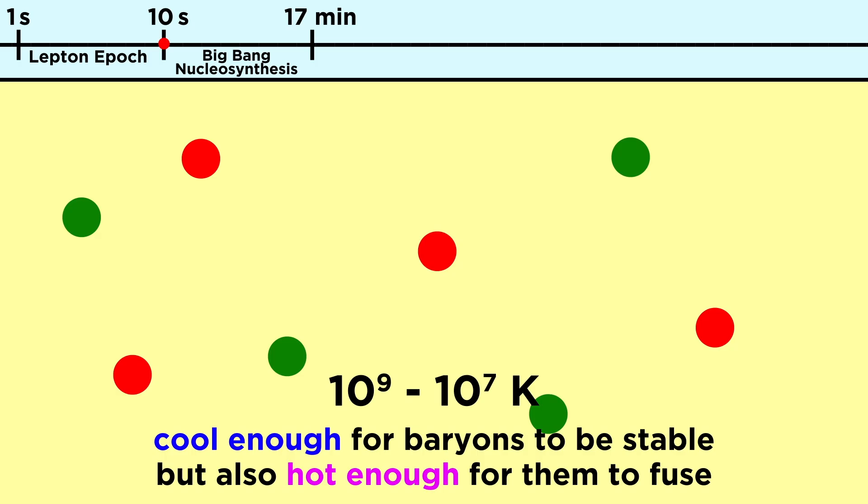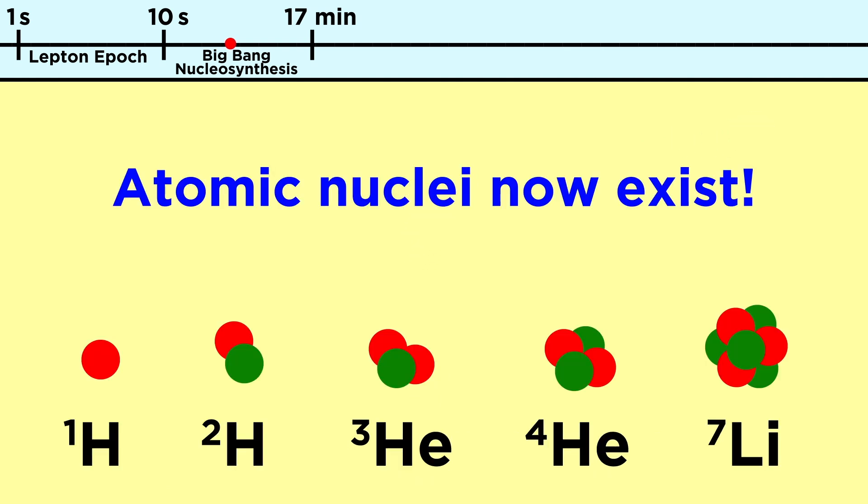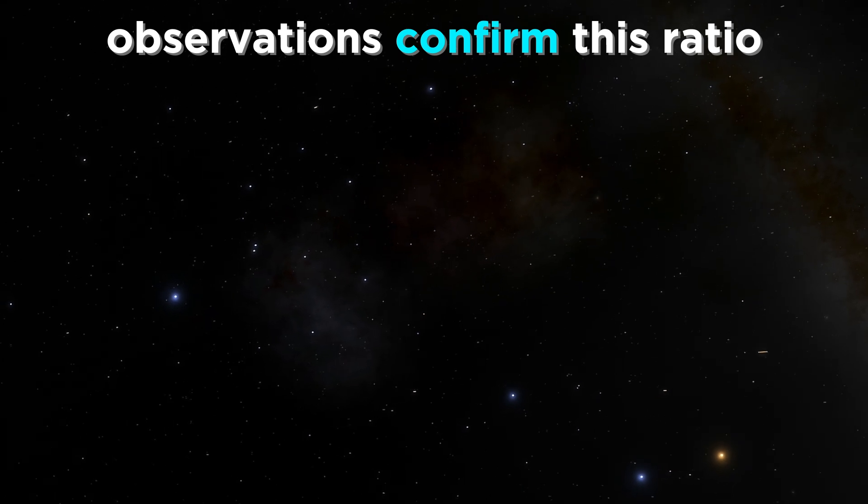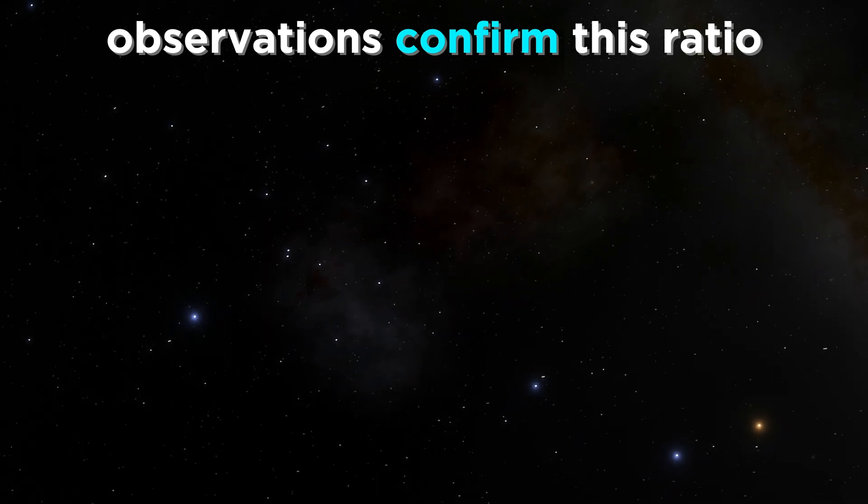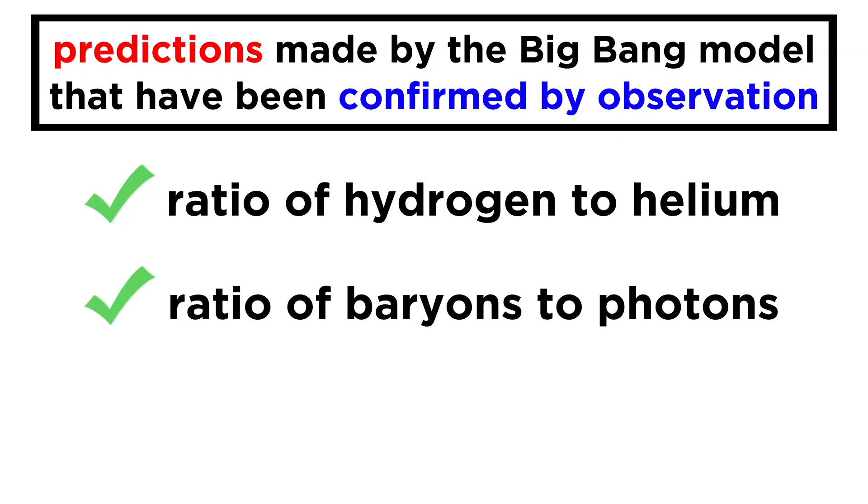For one thing, the model predicts that given the expected rate of cooling, there must have been a period where the universe was just cool enough for subatomic particles to exist and just hot enough for them to fuse. This was the period of nucleosynthesis we described when we first examined cosmology. This period should have been long enough such that about one fourth of the primordial hydrogen fused to become helium. And when we look around, we do indeed see a universe that is about three to one hydrogen to helium. A similar prediction can be made for the baryon to photon ratio in the universe, and this also matches up with observation.